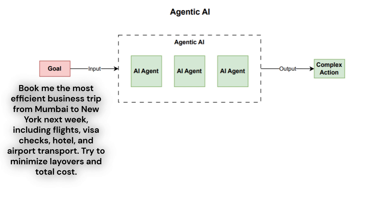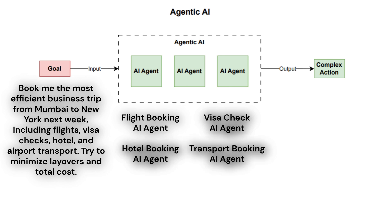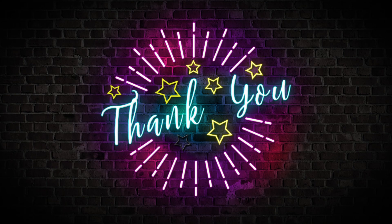To achieve this complex goal, there can be multiple AI agents communicating with each other: a flight booking AI agent, a visa check AI agent, a hotel booking AI agent, and a transport booking AI agent. After all the conversations between the agents are completed, the trip from Mumbai to New York is booked autonomously, taking into account all the requirements mentioned in the prompt. I hope you found this information helpful — stay tuned for an upcoming agentic AI demo in ServiceNow, and don't forget to subscribe for more content.